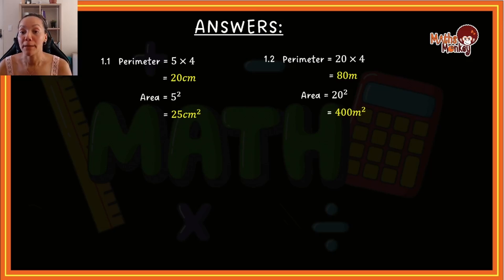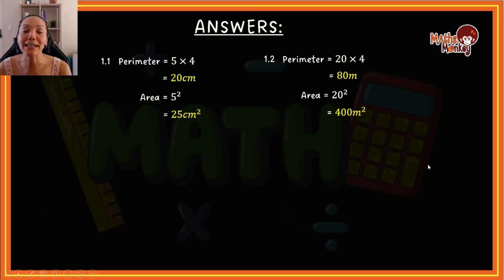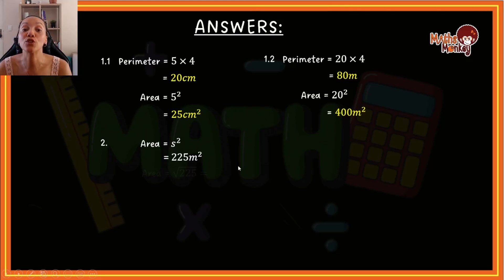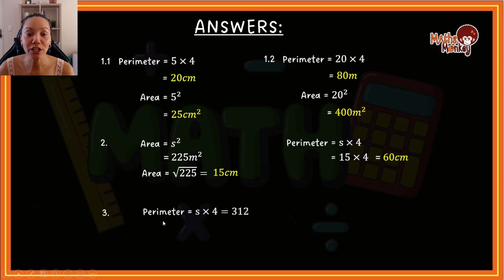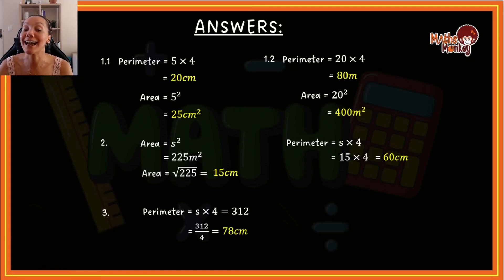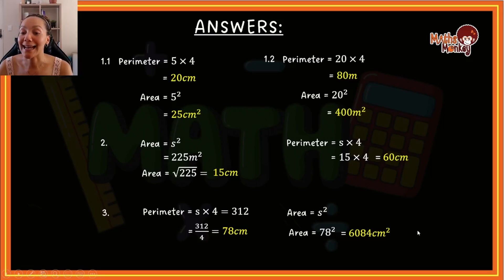Make sure you're using the right formula and the correct unit. For perimeter, your answer stays in the same unit as given; for area, you square the unit. For number 2: side squared was given as 225, so you square root it to find the side — 15 centimeters. Then perimeter is side times 4, so 15 multiplied by 4 gives 60. For the next question, the perimeter was given as 312, so divide by 4 to get 78 centimeters, and then use that to calculate the area: 6,084 centimeters squared.